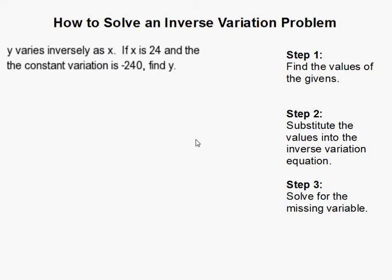How to solve an inverse variation problem. This is a very common problem, so I'll go ahead and read it to you first. y varies inversely as x. If x is 24 and the constant variation is negative 240, find y.